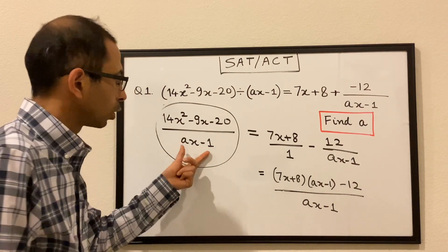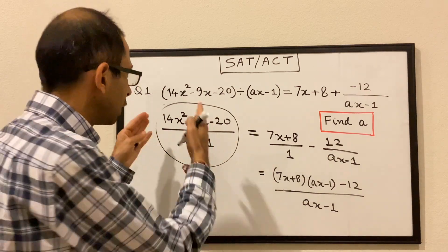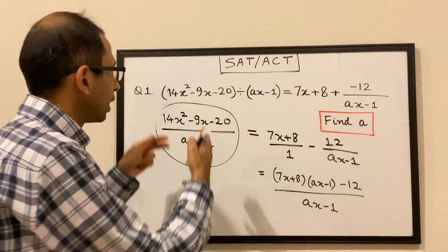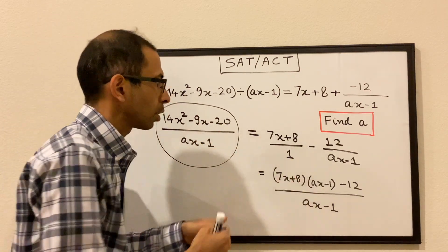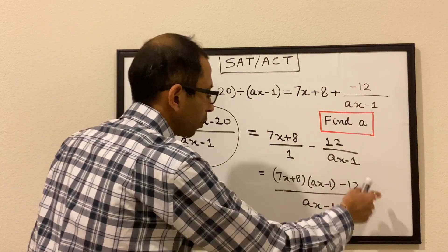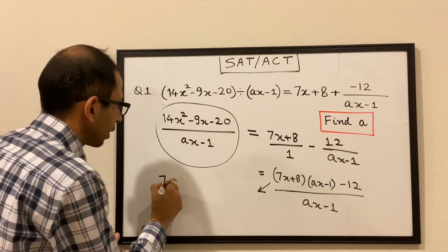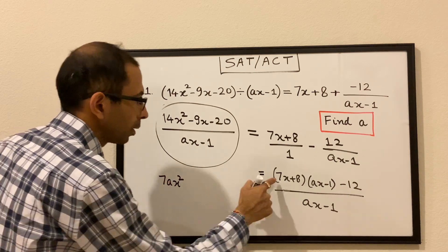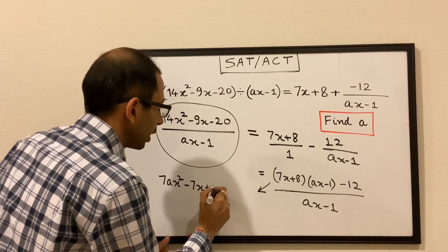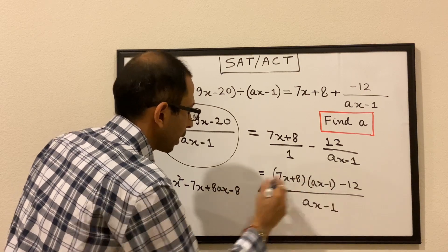Now the denominators on the left and right are the same, so for these two sides to be equal, each of the respective terms must be equal — the x² term, the x term, and the constant term. Let's simplify the numerator of the right side: we get 7ax² minus 7x plus 8ax minus 8, and then minus 12 is already there.